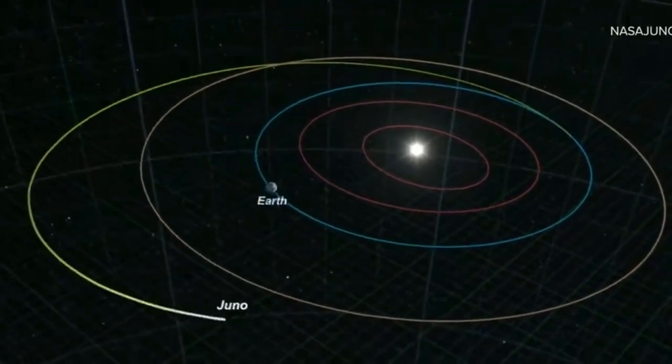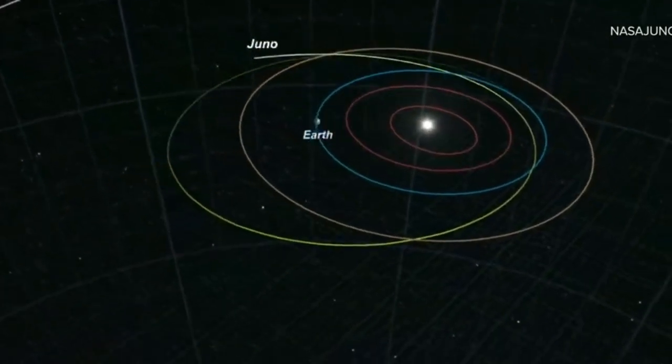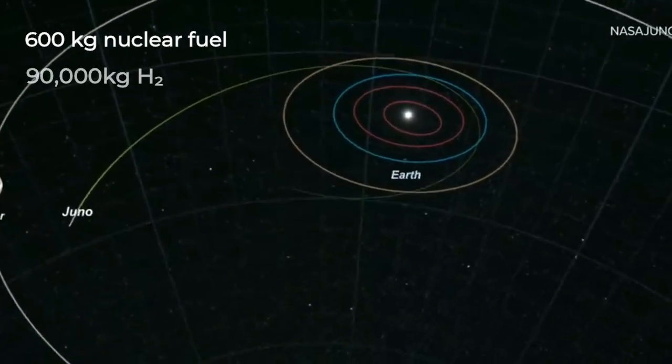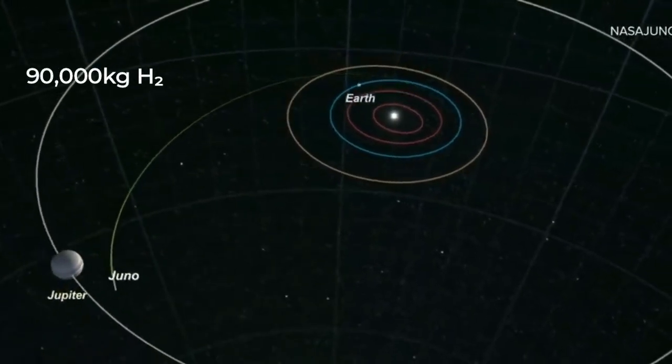With that in mind, a trip from Earth to Jupiter and back would only require about 600 kilograms of nuclear fuel and 90,000 kilograms of hydrogen.